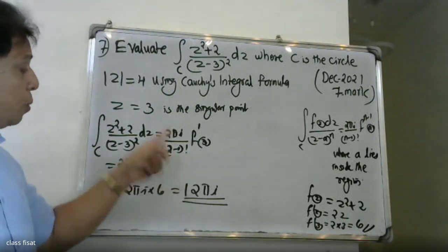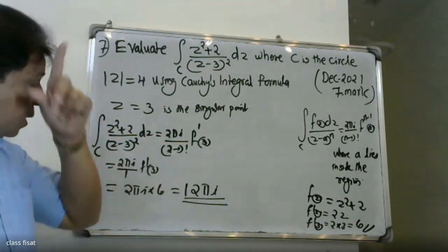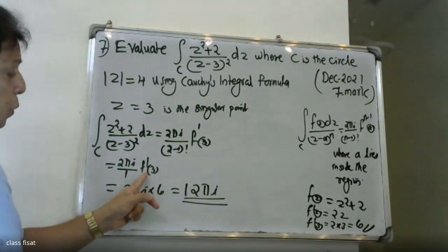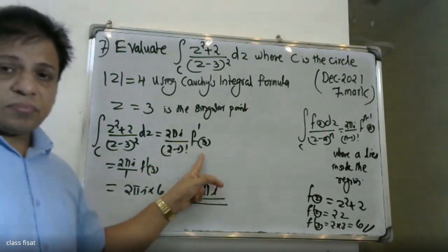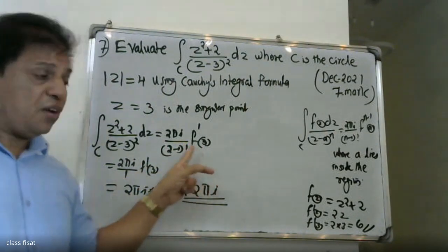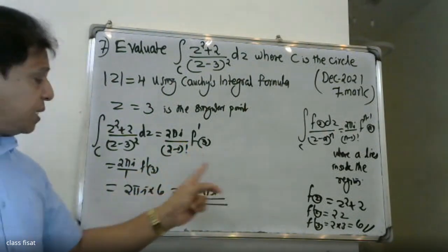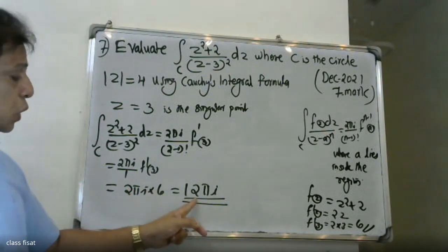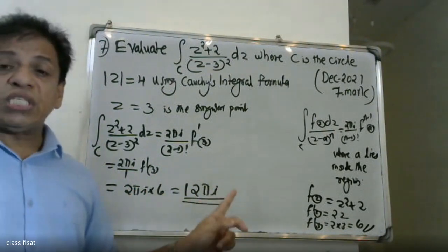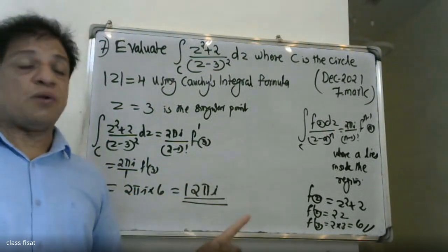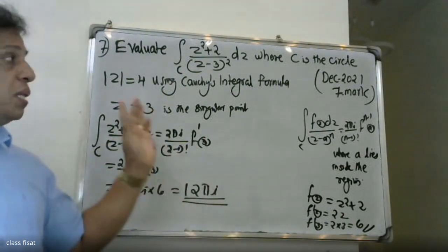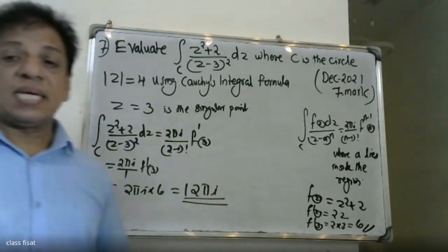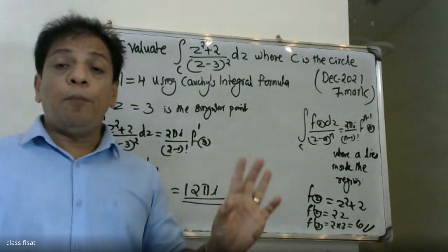Therefore, the integral equals 2πi / (2-1)! times f'(3) = 2πi / 1 times 6 = 12πi. The final answer is 12πi.